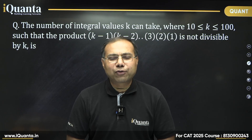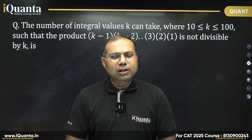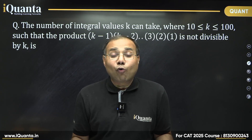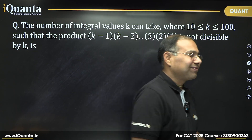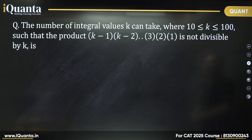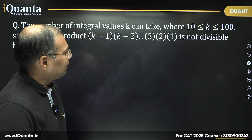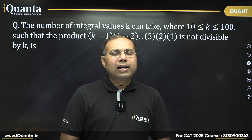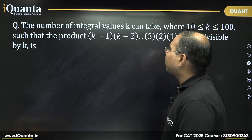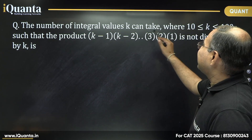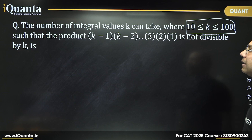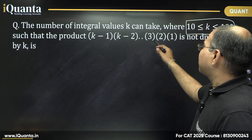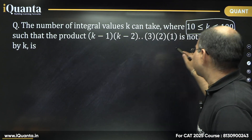Welcome back to another wonderful question. As always, I am giving you some time to solve this question on your own — you can pause your video, take a screenshot, and solve the question and come back. The question says: find the number of integral values k can take, where k is in the range 10 to 100, such that the product (k−1)(k−2)···3·2·1 is not divisible by k.